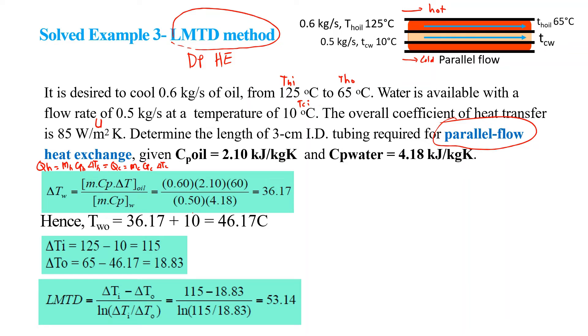It's exactly the same as the previous calculation. We know that the T water out equals 46.17°C.